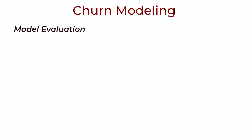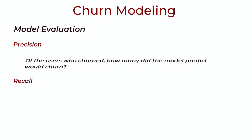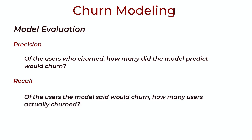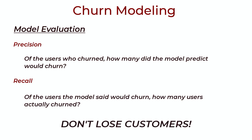When evaluating the model, we can use precision and recall — but let's break these down for non-technical stakeholders. Precision: of the number of users who churned, how many did we say would churn? Recall: of the number of users we said would churn, how many actually churned? With these concrete definitions, we can report the stats of our model. It's probably not perfect, but acting on the model output gets us closer to the overarching goal of not losing customers.